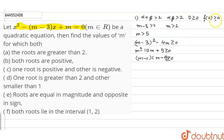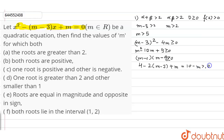For f(2) greater than 0: putting x equal to 2 in the equation gives 4 minus 2(m minus 3) plus m, which simplifies to 10 minus m, and that should be greater than 0, so m should be less than 10. Taking the intersection of all these conditions, the value of m for which this situation holds is m belonging to [9, 10).